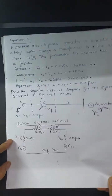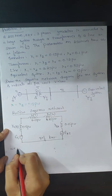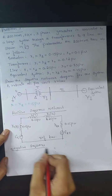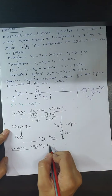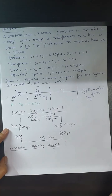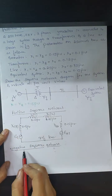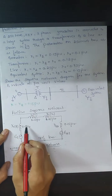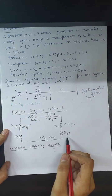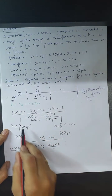Next, we draw the negative sequence network below the positive sequence network. The negative sequence network is just similar to the positive sequence network, but the source voltages Eg and Es will not be present in the negative sequence network. Excluding these two source voltages, the remaining parameters are retained in the diagram.